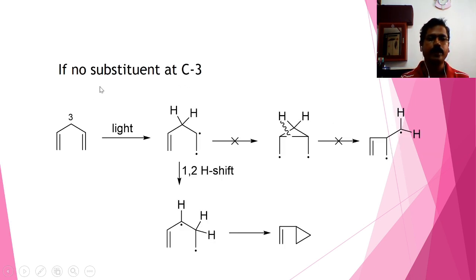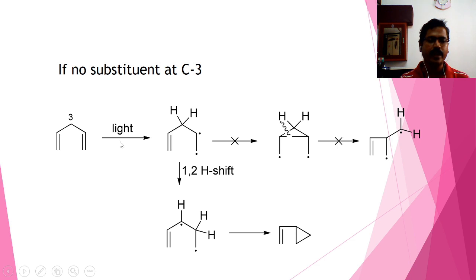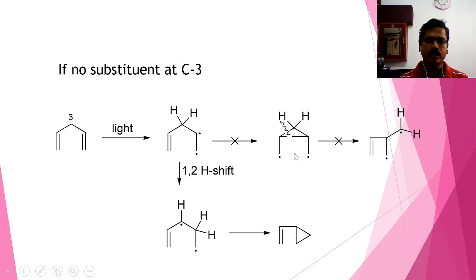Now let us see what would happen if there is no substituent at carbon-3. Here you do not have a substituent. It is also a 1,4-diene. When you shine light on this compound, you get a diradical, and we expect that this pi bond also would undergo homolysis and a bond would be formed between these two carbon atoms to give this diradical. But this does not happen because when this happens, this diradical has to cleave — this cyclopropene ring has to cleave.